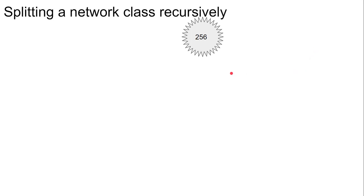In a previous video, we saw how to split a network in half. For example, this 256 IP address network was split into two 128 address networks.